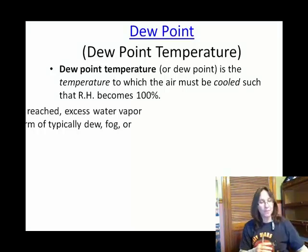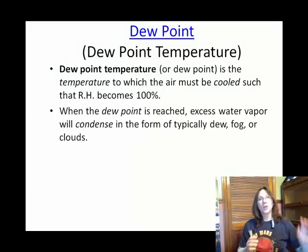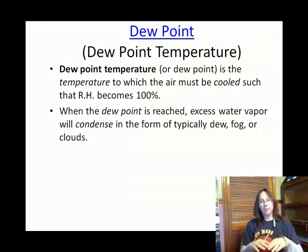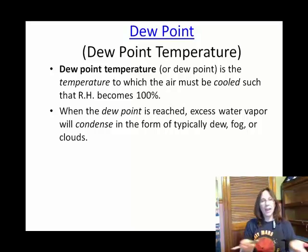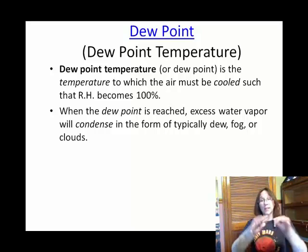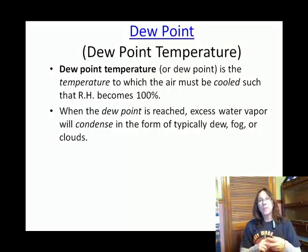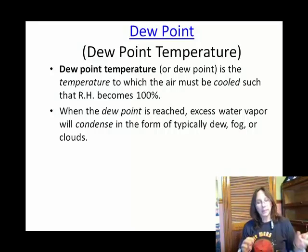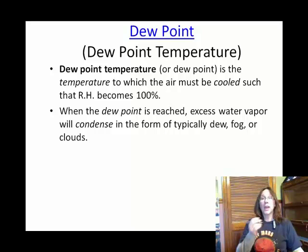The dew point temperature will always be lower than the current temperature. When you cool the air down to the dew point temperature, you expect the water vapor to liquefy, and you can have an assortment of outcomes. For instance, you can have dew form on objects on the surface, you can have fog form — and remember, fog is basically a cloud at ground level — or you can have clouds form. We'll talk more about the formation of clouds and fog coming up. So you're going to get some sort of condensation at the dew point temperature.